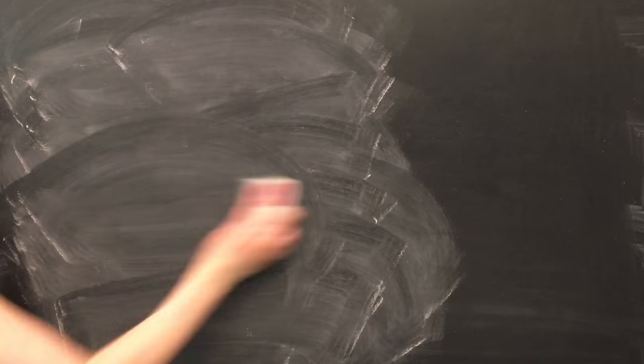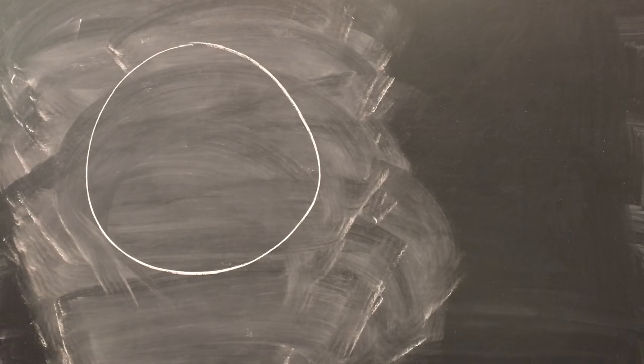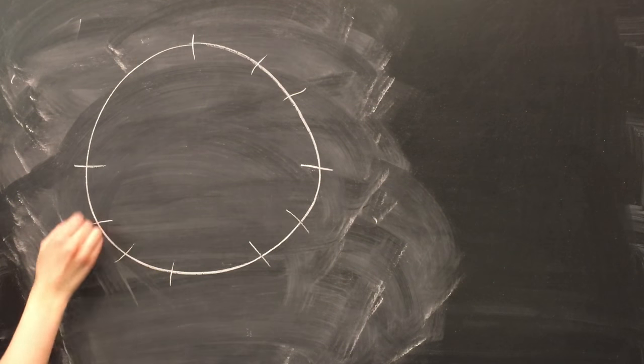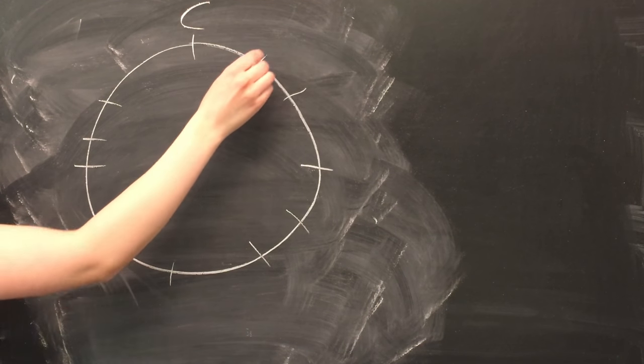The circle of fifths is a way of organizing the different key signatures that makes it easier to remember what key signature goes with which scale. You start with C, which has no sharps or flats, and then go up by perfect fifths to fill in the keys on the slots of the circle.